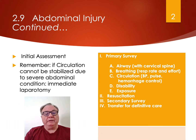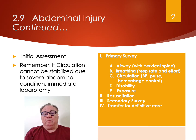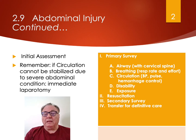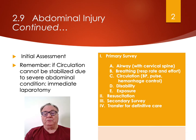Abdominal injury is initially assessed like all injuries through the primary survey. You must check the airway, the breathing, the circulation. Hemorrhage control in circulation can be relevant to the abdomen. Disability and exposure — you need to look at the abdomen from all aspects.